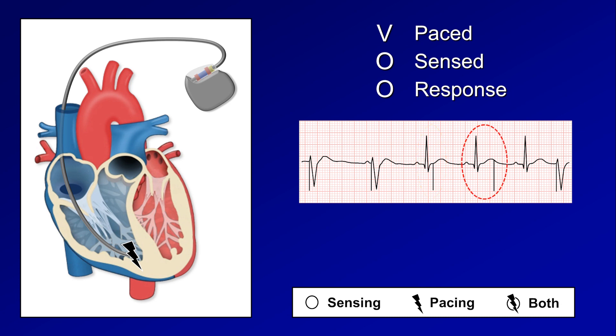The next beat looks similar, except now the pacing spike occurs right on the T wave, which is particularly dangerous as it risks triggering ventricular fibrillation. Luckily in this case it doesn't, and is followed by another intrinsic beat and then another paced beat. If you look carefully, the pacing spikes are separated by an identical duration — in this case one second or 1000 milliseconds — marching right through whatever the heart is doing on its own.